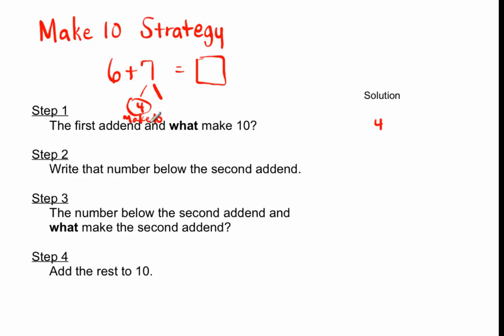6 and 4 make 10, and we've taken care of Step 2. Step 3 says: the number below the second addend and what make the second addend? So, this 4 and what make 7? 4 and 3 make 7.